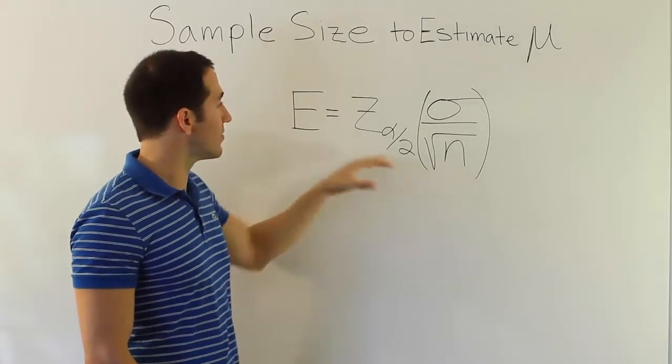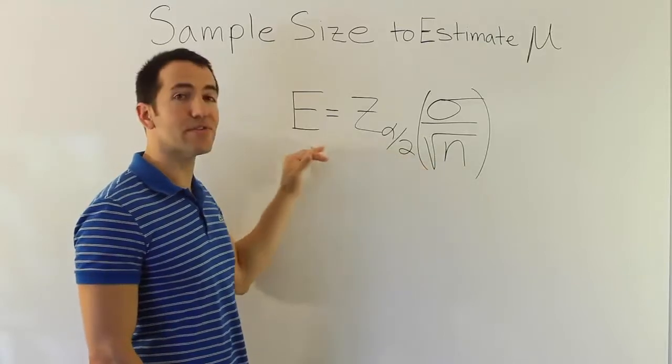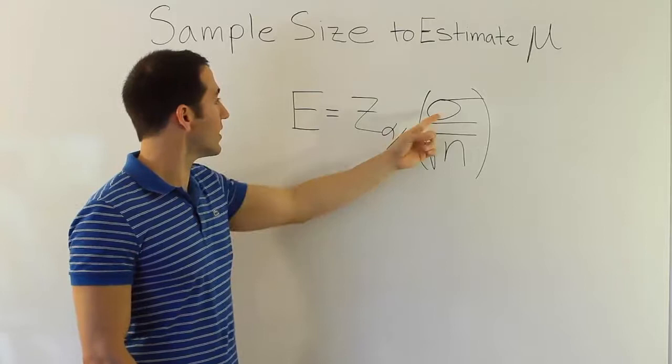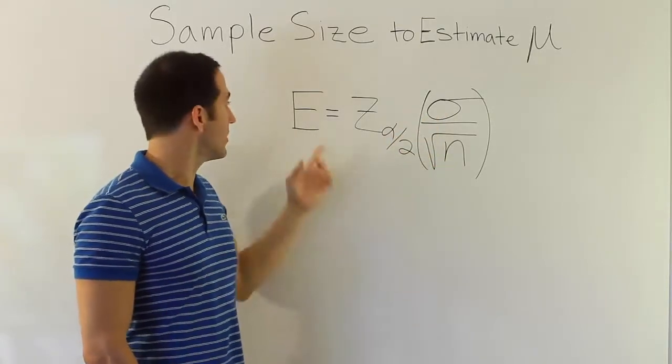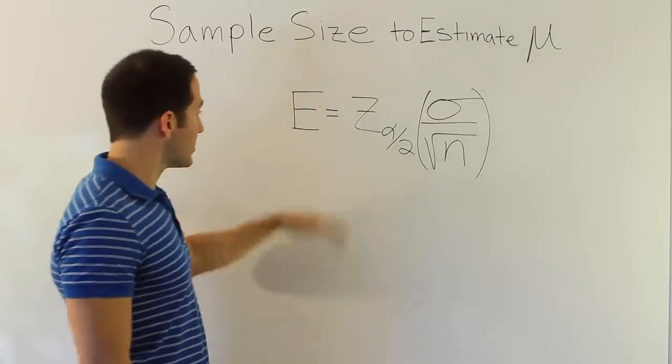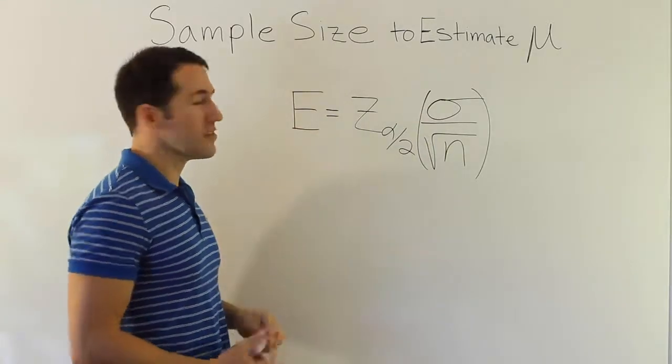And in order to do that, it's very simple. We're going to solve this equation for n. And then we'll have a relationship between these three quantities and n. And from there we can substitute in these values and it will tell us what our n value is. In order to do that, we just need a little algebra on this formula. So let's do that. It's pretty simple.